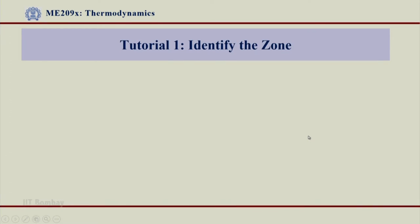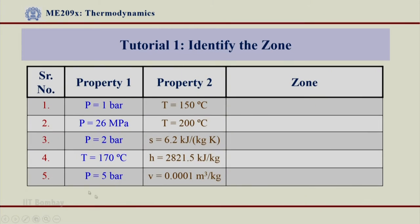The first problem we are referring to now — these are the problems. We have 5 problems for Tutorial 1, numbered 1 through 5, and we have 2 properties given for every problem.